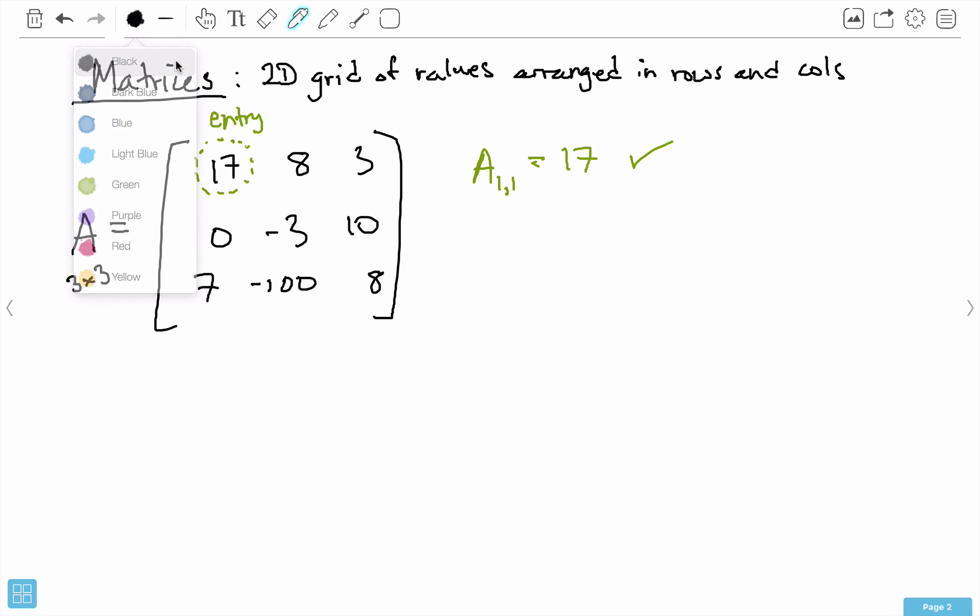The way that this works is these two things are called indices. What they allow us to do is access the individual entries of a matrix instead of having to refer to this thing as a whole. This first entry is at position 1,1, and mathematically we start numbering matrices at 1 instead of 0 like we do in computer science.